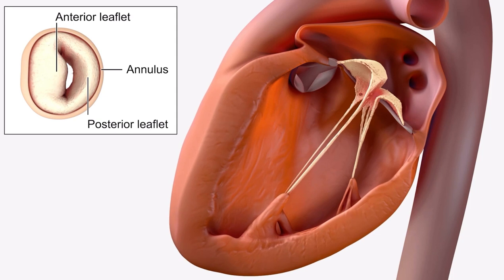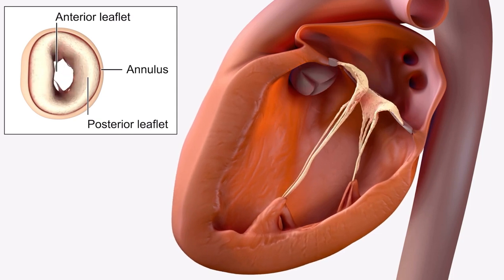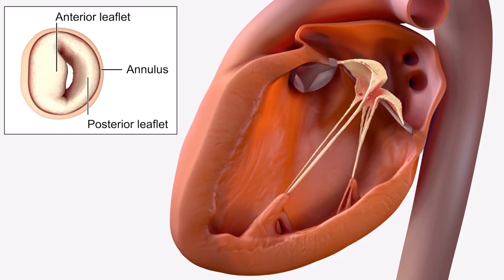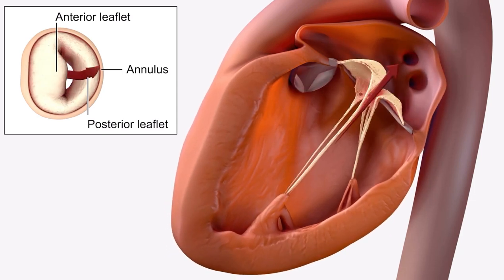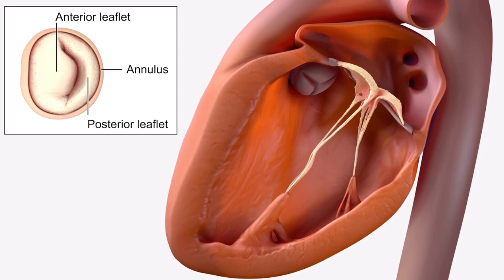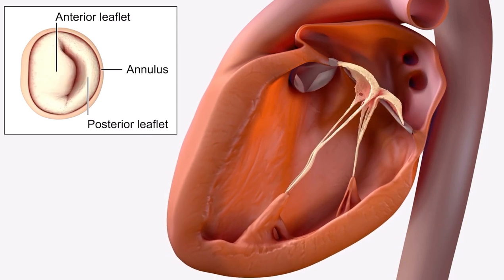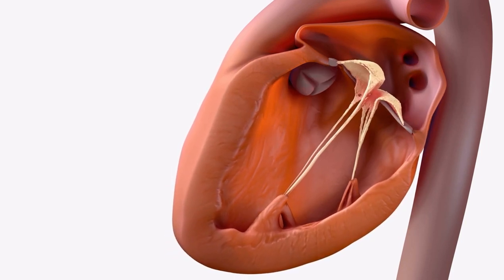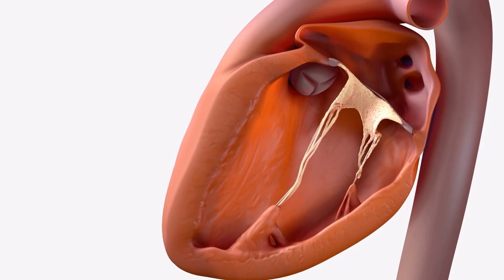Myxomatous degeneration of the mitral valve disrupts structural integrity and increases the laxity of the valve leaflets and cordae tendinae. This can lead to mitral valve prolapse, which is abnormal displacement of the valve leaflets into the left atrium during valve closure.